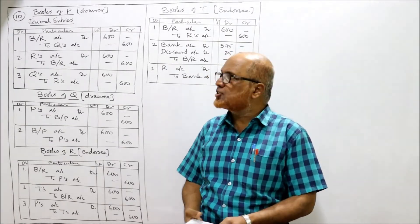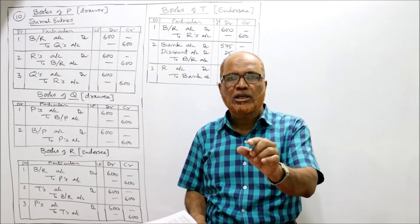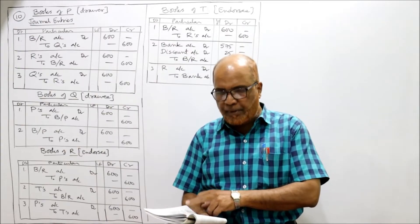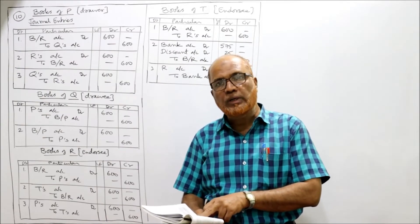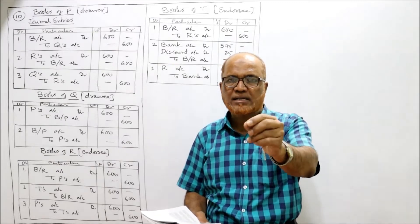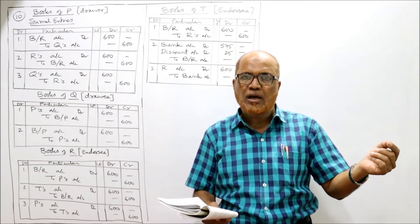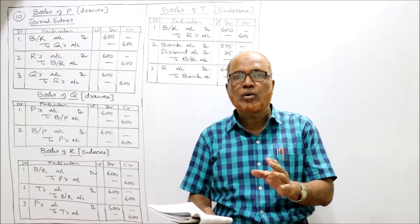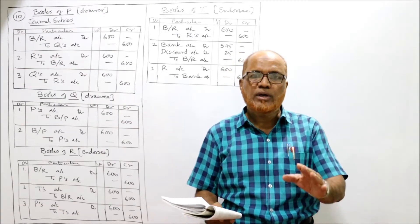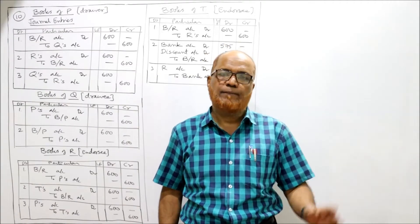Now we start problem number 10. P draws a bill on Q for 600 rupees. Q accepts the bill and returns it to P. P endorses the bill to R, and R endorses the bill to T. T discounts the bill with his banker for 575 rupees. On the due date the bill is dishonored by Q. We are required to pass general entries in the books of all four parties: P, Q, R, and T.